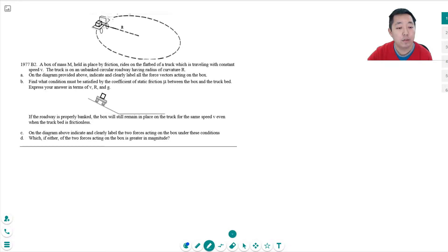On the diagram provided above, indicate and clearly label all force vectors acting on the box. Let's do this in kind of red. We have gravity, mg, and we have friction that's holding it in a turn. Let's have a normal force.